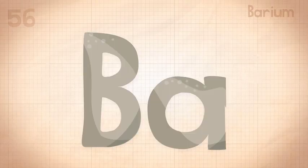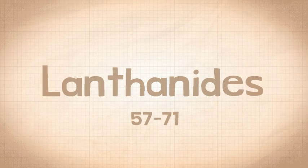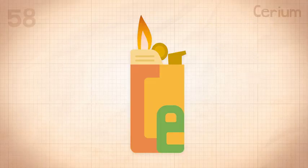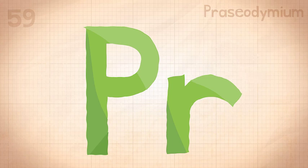And then cesium, and barium is 56, and this is where the table splits, where lanthanides have just begun, lanthanum, cerium, and praseodymium.